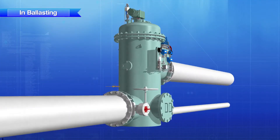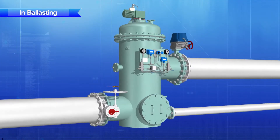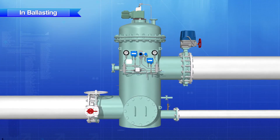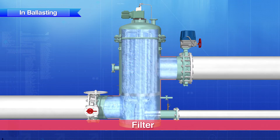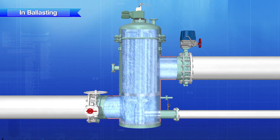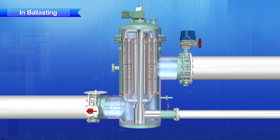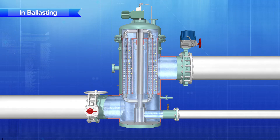First, ballast water that has been sucked up by the ballast pump passes through the filter. The ballast water enters through the lower part of the filter, and plankton larger than 50 micrometers is removed by the filter elements and returned to its original water together with the backwash water.